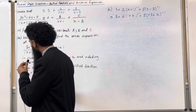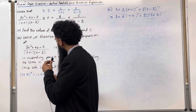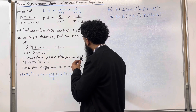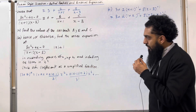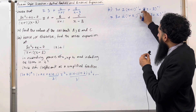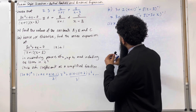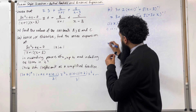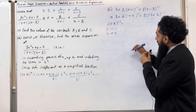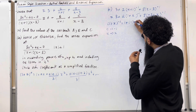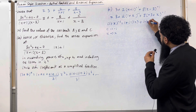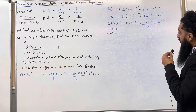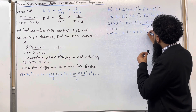We use the binomial expansion formula: (1 plus x) to the power n equals 1 plus nx plus n(n minus 1) over 2 factorial times x squared plus n(n minus 1)(n minus 2) over 3 factorial times x cubed plus dot dot dot. Expanding (1 plus x) to the power minus 1 with n equals negative 1: the first term is 1, the second is minus 1 times x, and the third is (minus 1)(minus 2) over 2 times x squared. This simplifies to 1 minus x plus x squared.